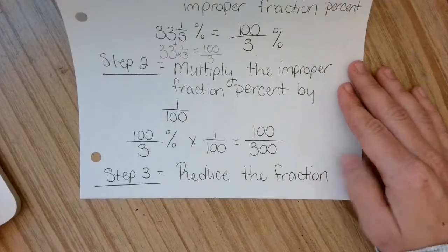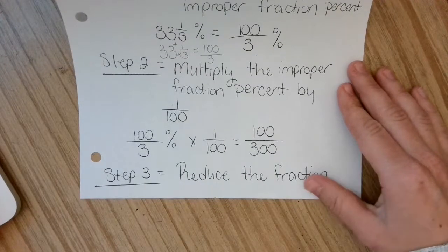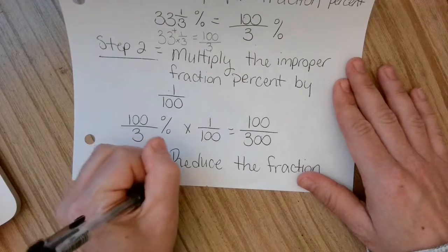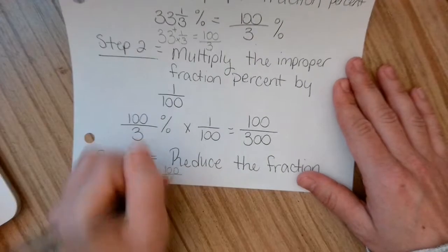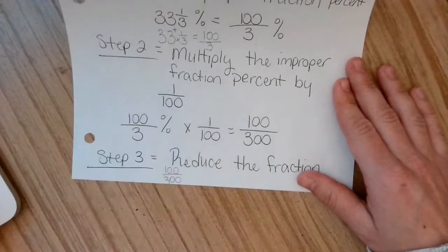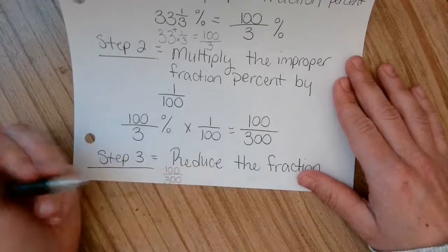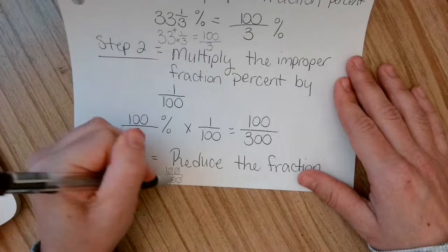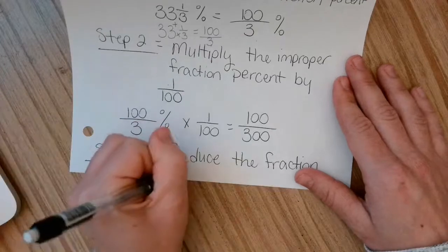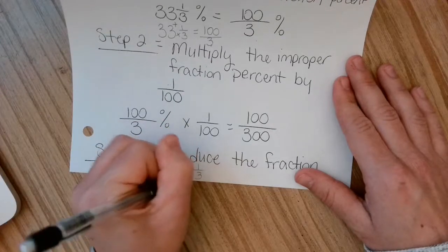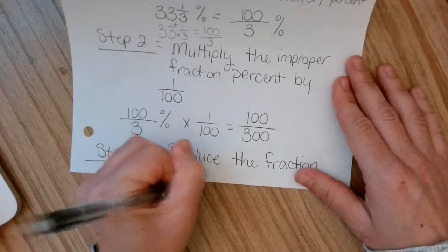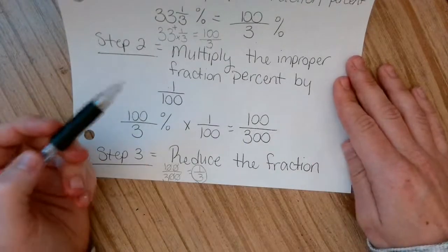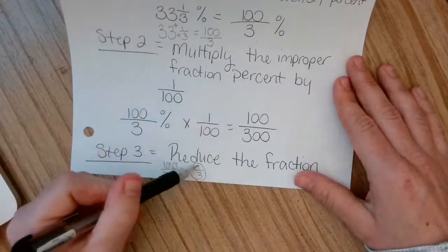Then the last step is to just reduce that fraction. So if I have 100 over 300, there are obviously some zeros that I can cross out. So then I'm left with 1 third as my answer. So 33 and 1 third percent equals 1 third.